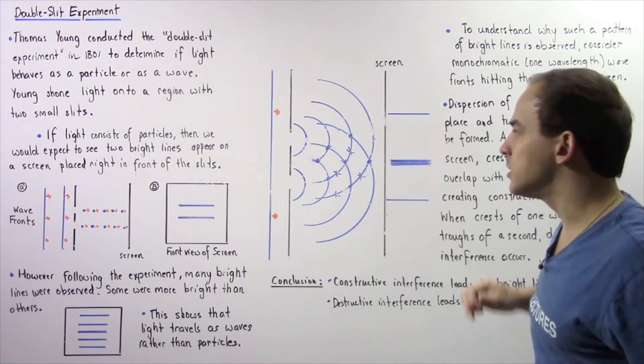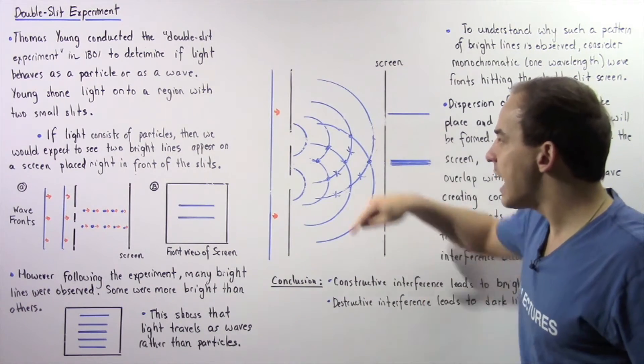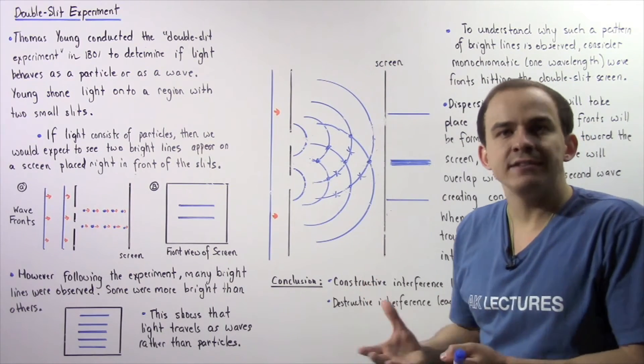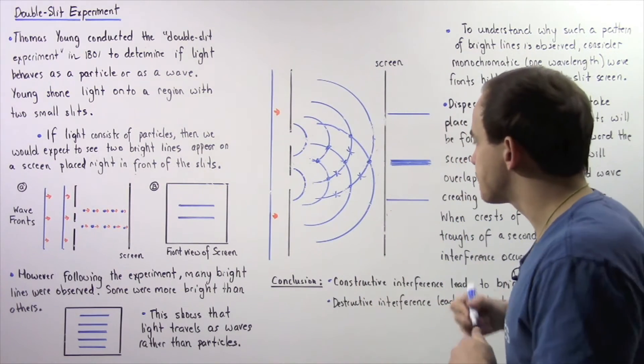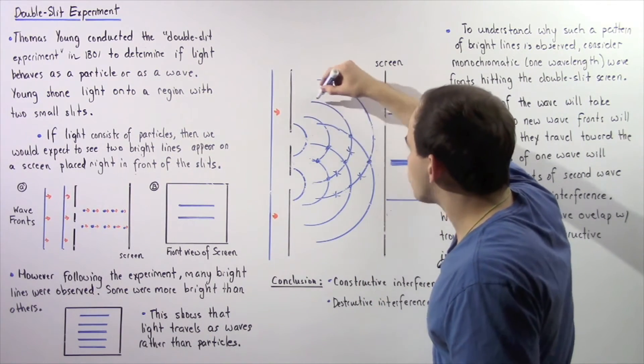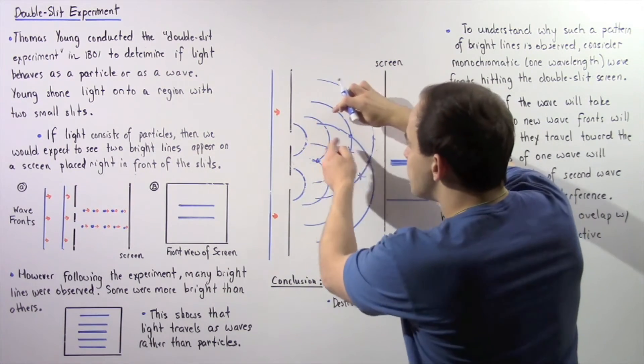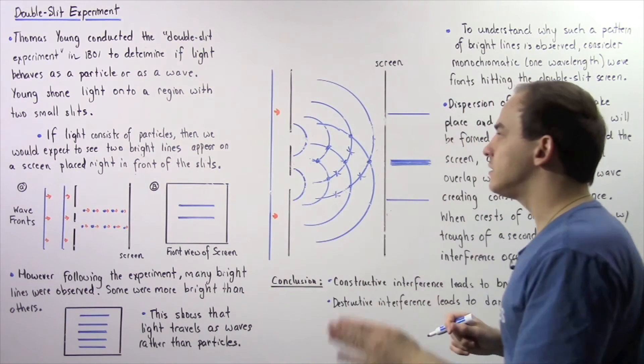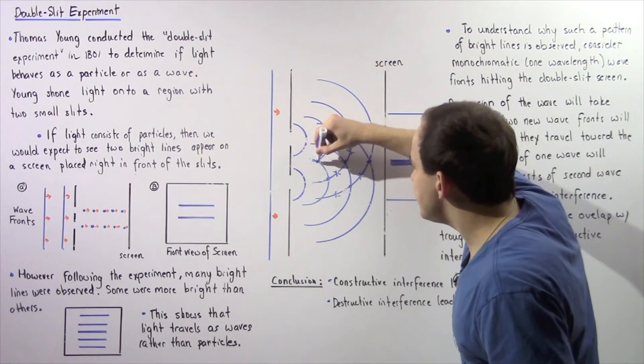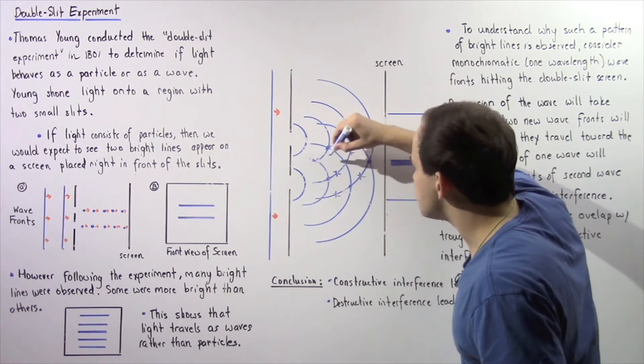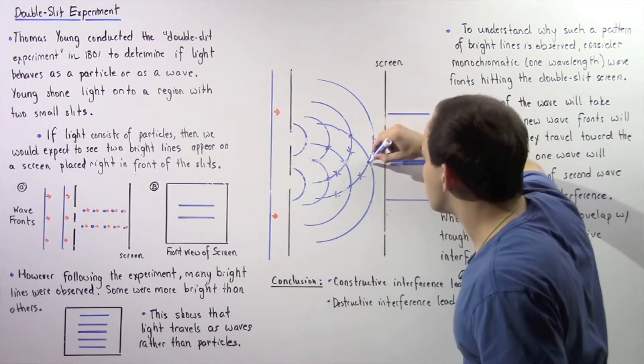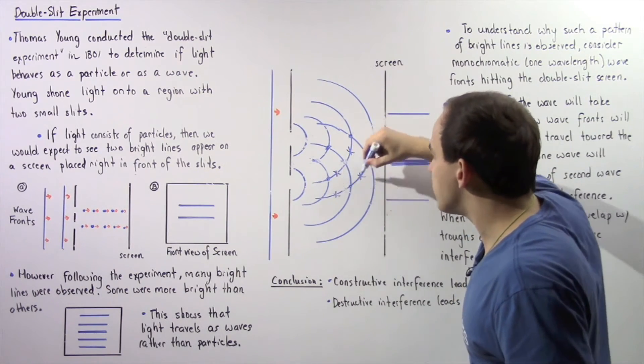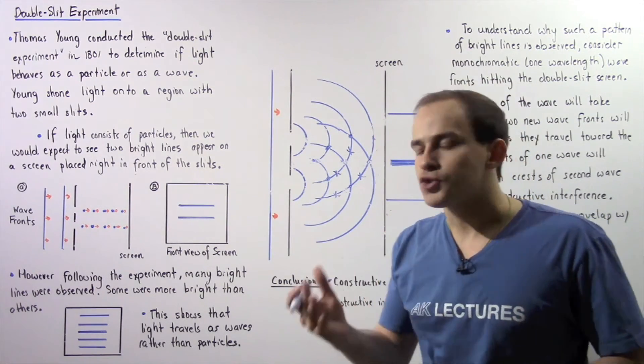So as they travel toward the screen, crests of this wave front will essentially overlap with the crests of this wave front, and that will essentially create constructive interference. So these blue regions represent the crests, and the empty regions in between the blue regions represent the troughs.